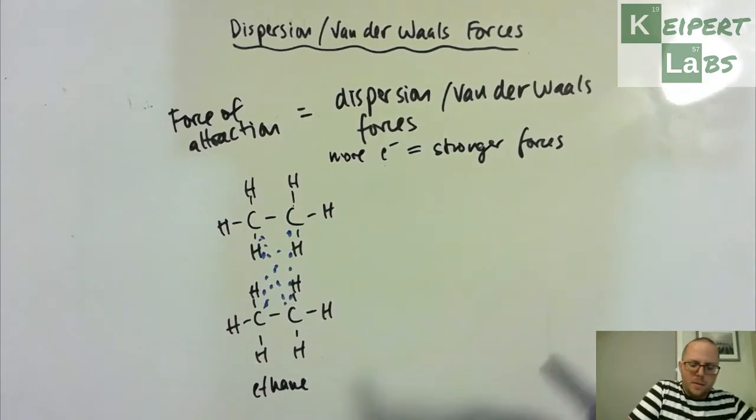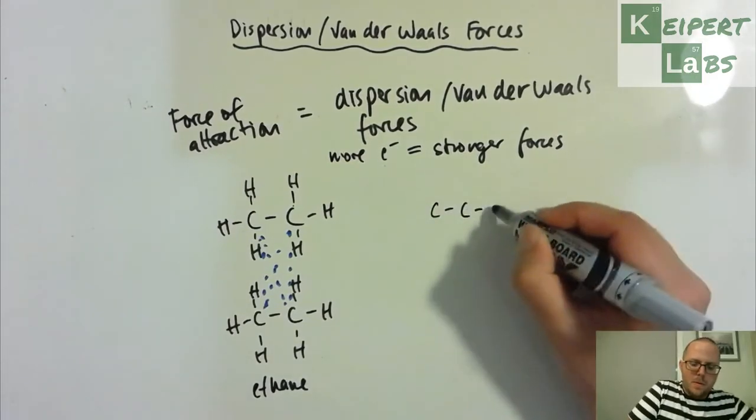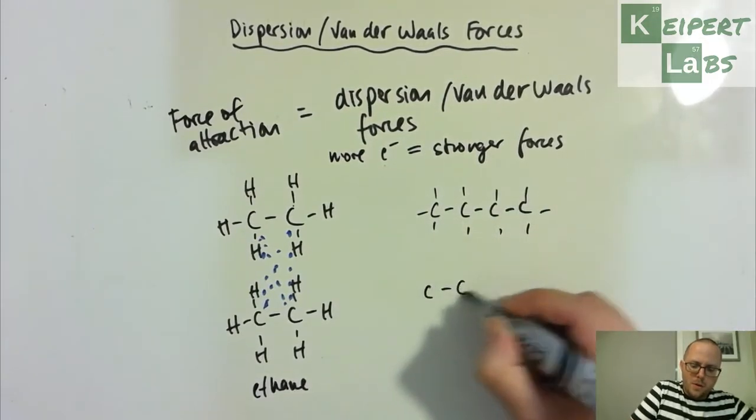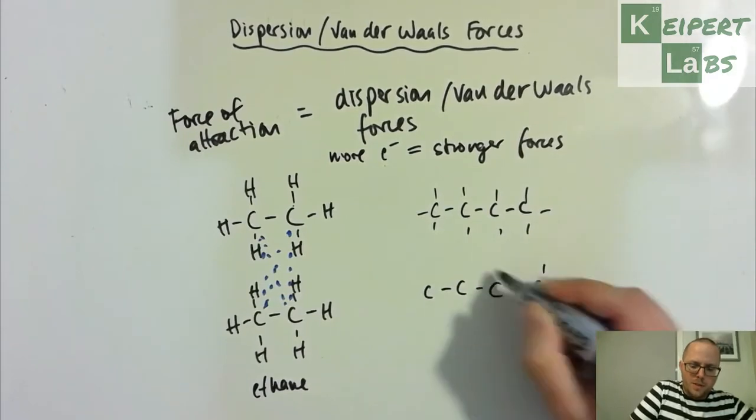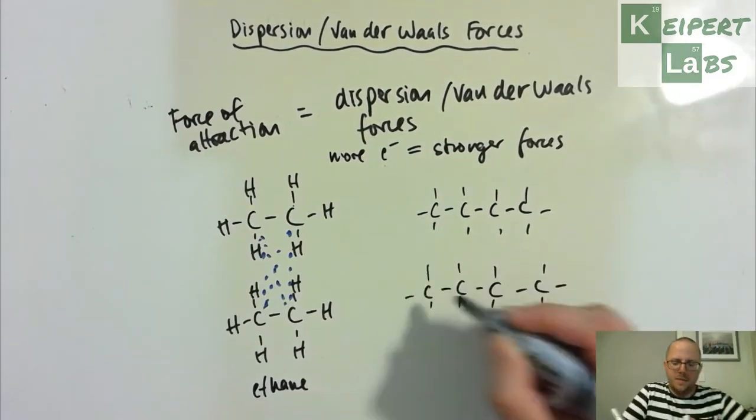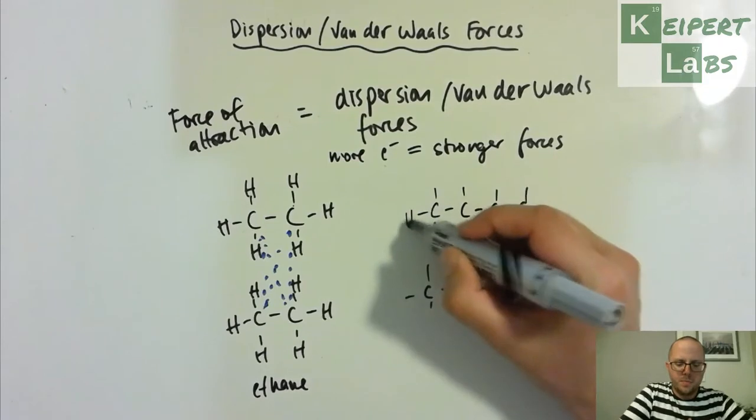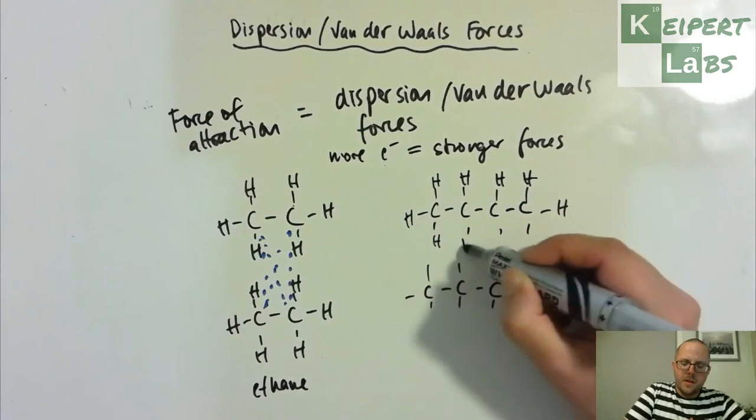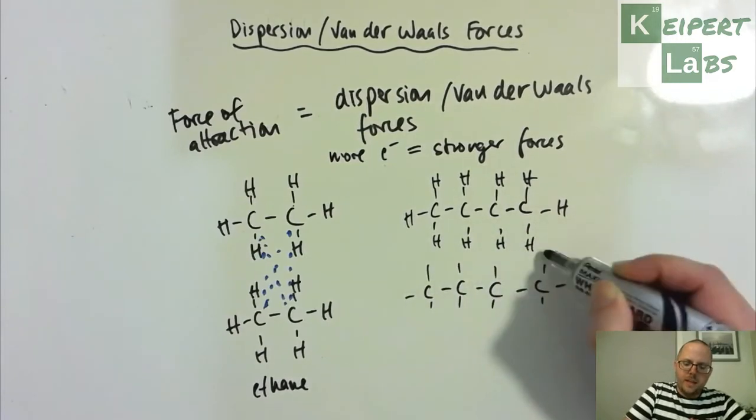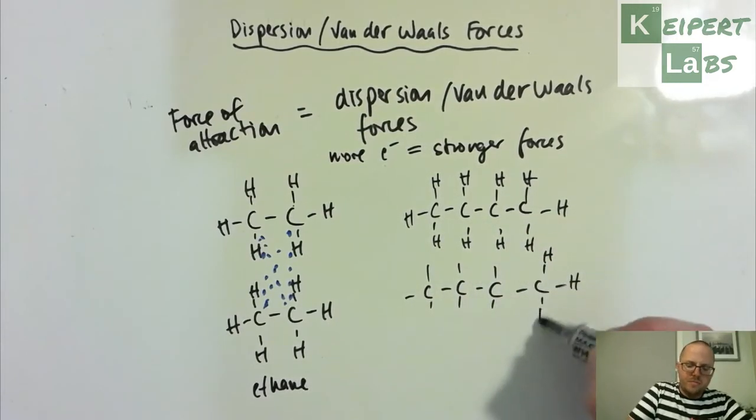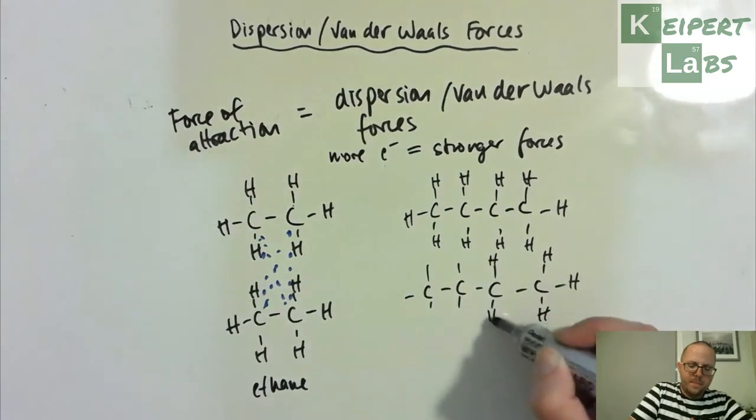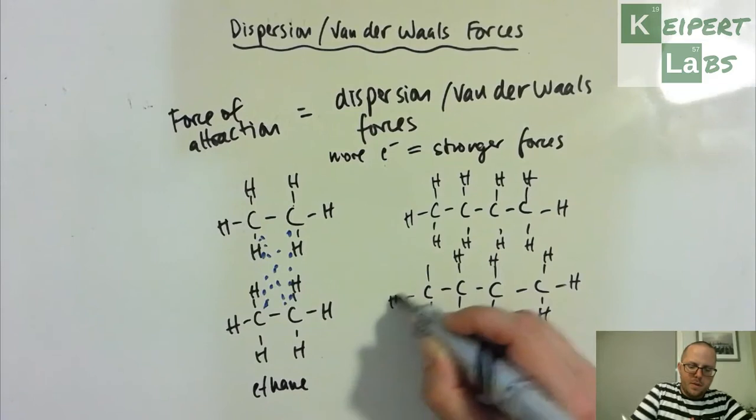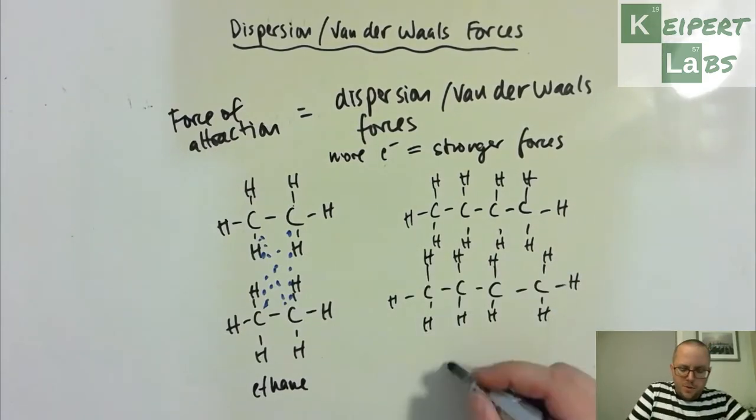But let's say I have two molecules of this compound called butane. We use it in camp stoves as a fuel source, also in cigarette lighters and kitchen blow torches and those sorts of things. This one is called butane.